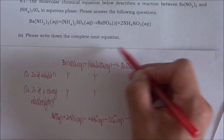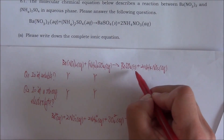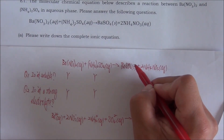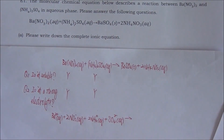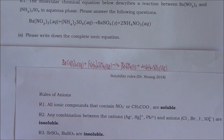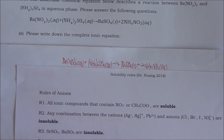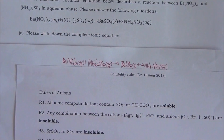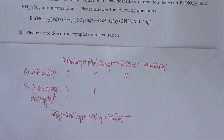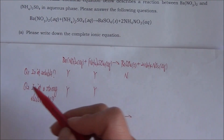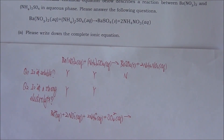Now let's look at the third compound: barium sulfate. As mentioned, if the state is S (solid), it is insoluble. We can also use the solubility rules — according to rule number three, barium sulfate is one of two compounds that are insoluble. Since the answer to question one is no, we keep the compound in molecular form.